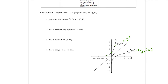We drew this picture in the last video, using the property that if a particular point — like (1, 3) — is on the graph of the exponential, then flip-flopping the x and y gives a point on the graph of the logarithm.